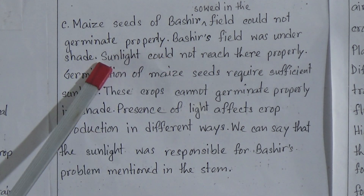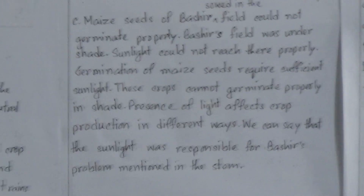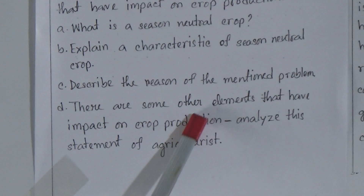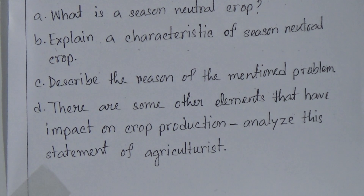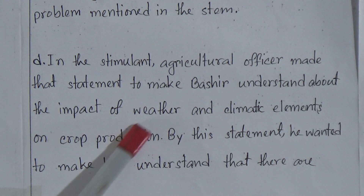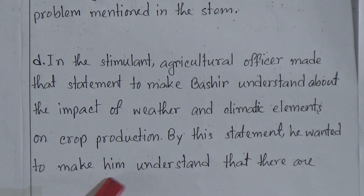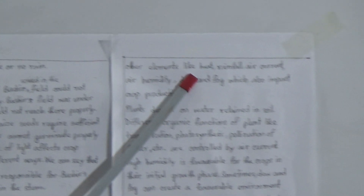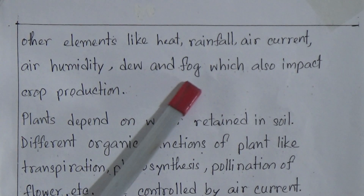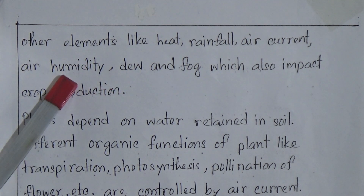Question D: There are some other elements that have impact on crop production — analyze this statement of the agriculturist. The answer is: in this stem, the agricultural officer made that statement to make Bashir understand about the impact of weather and climatic elements on crop production. There are some other elements related to weather and climate. By this statement, he wanted to make Bashir understand that there are other elements like heat, rainfall, air current, air humidity, dew, and fog which also impact crop production.